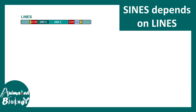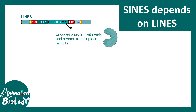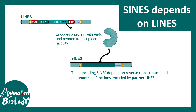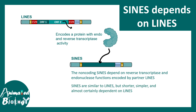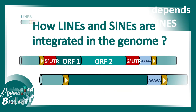So let's see how this transposition happens. LINEs code for a protein with endonuclease and reverse transcriptase activity, which is also required by SINEs for stable genomic integration — meaning SINEs are totally dependent on LINEs. LINEs are autonomous; SINEs are non-autonomous. SINEs are similar to LINEs but they are shorter, simpler, and almost totally dependent on LINEs.